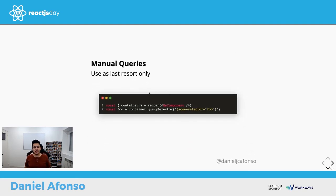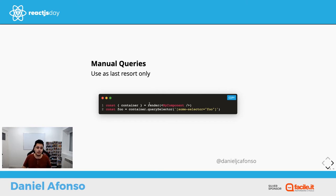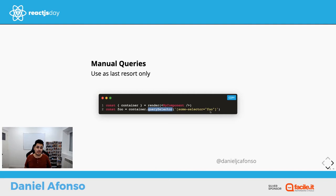For manual queries, instead of destructuring a query, you render the component and destructure the container. Then you call container.querySelector('some-selector') to search by class or ID. This is an escape hatch and should be avoided since it reflects implementation details — use it only as a last resort.